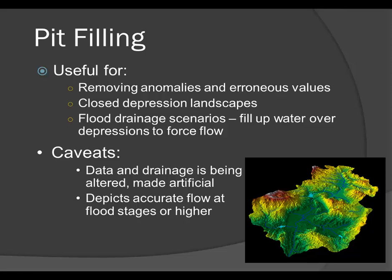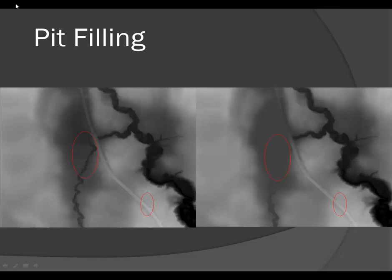You have to understand that this is altering the landscape so that we can more accurately reflect flow at higher flood stages. Here is an example of pit filling where we have a pit or depression — it's not clear how water is moving on the landscape as it flows in. There are a series of sinks, so we fill those and route water on the landscape as if all the small depressions do not exist.